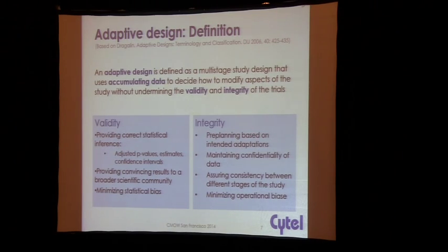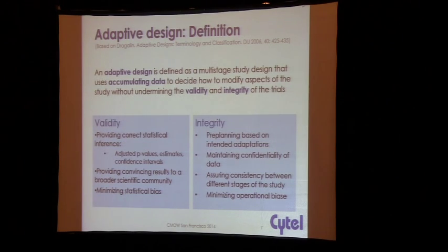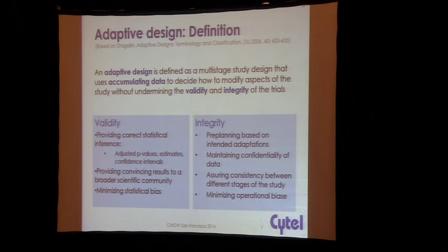All this while ensuring that we do correct statistical inference, that we make good inference out of the data that we collect, and that we are able to convince the broader audience — stakeholders — that this trial was well-planned, well-run, and even though there was an adaptation, there was no tinkering around with data or results to make it look favorable. This is where pre-planning has become a big thing.